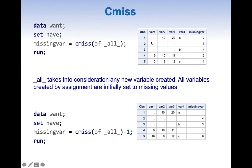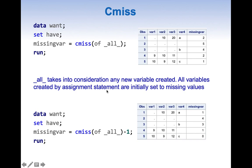Looking at the results, here we have one missing value but it is showing two, and here we have four missing values but it is showing five — we are finding one extra missing value. This is because _ALL_ takes into consideration any new variable created. The new variable 'missing_var', when created by an assignment statement, is initially set to missing, so it adds that extra missing value.